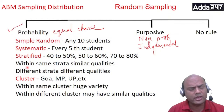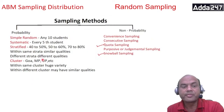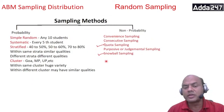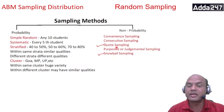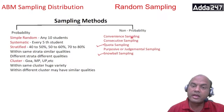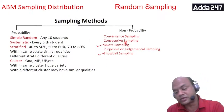Now more about non-probability sampling. The types are: convenient sampling, consecutive sampling, quota sampling, purposive or judgmental sampling, and snowball sampling. I will cover each in a separate slide.